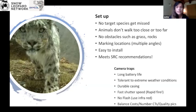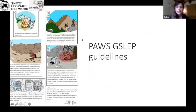Whether you put one or two camera traps in a location is something to think about. It goes back to the same message from the first session: it's about planning and really thinking about your equipment, what you have, knowing your camera, knowing your study area, knowing your snow leopards in that area. The PAWS GSLAP guidelines, which will be available soon on the GSLAP website, provide some of these guidelines with more information.